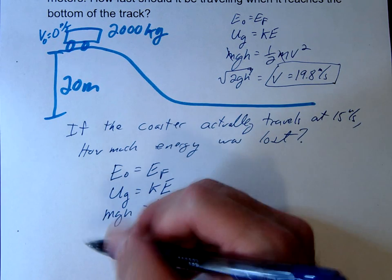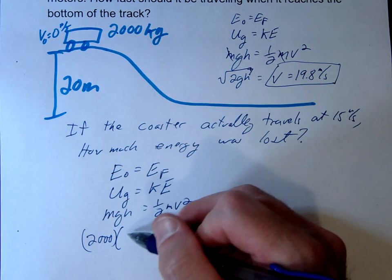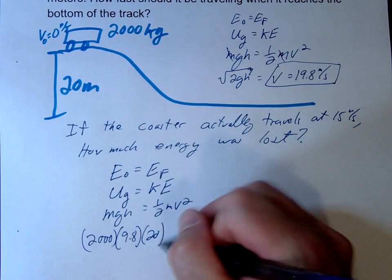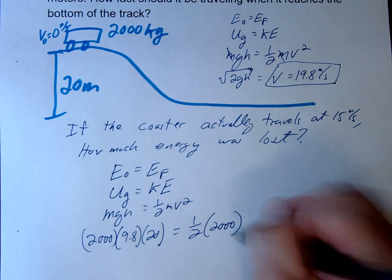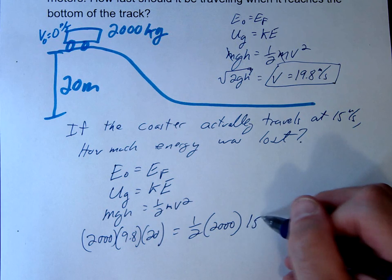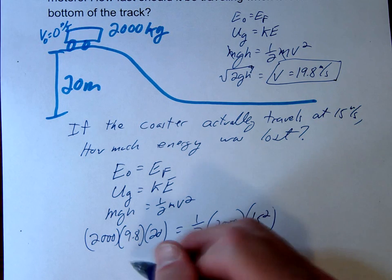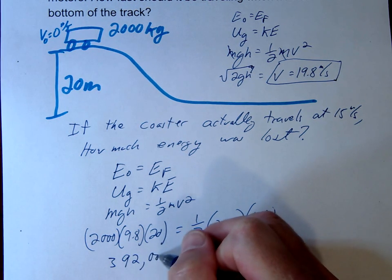MGH equals 1 half MV squared. Let's use the numbers that I gave you. So we're not going to cancel the masses here. We're just going to say 2,000 times 9.8 times our height of 20 should equal 1 half times 2,000 times our velocity squared, 15 squared. So when we do this, 2,000 times 9.8 times 20, we're going to get 392,000 joules.